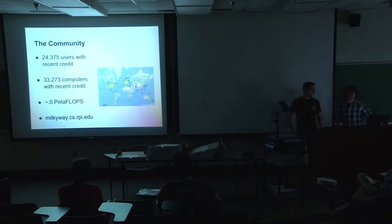We do this with a project called Milky Way@Home, which is Berkeley Open Infrastructure for Network Computing Project or a BOINC project. It's a massively distributed parallel computing volunteer network, which we currently have 24,375 users with credit. A lot of them actually have more than one computer running on our network. So that's 33,000 computers with credit. And we have about half a petaflop of computational power behind us right now.